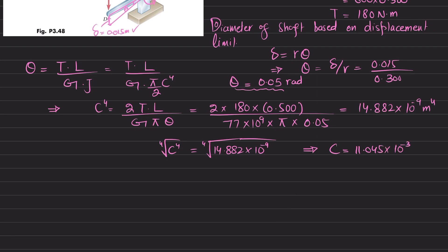We are interested to find the diameter, so diameter equals two times radius. So 2 multiplied by 11.045 millimeters equals 22.1 millimeters. This is the required diameter based on the displacement limit.